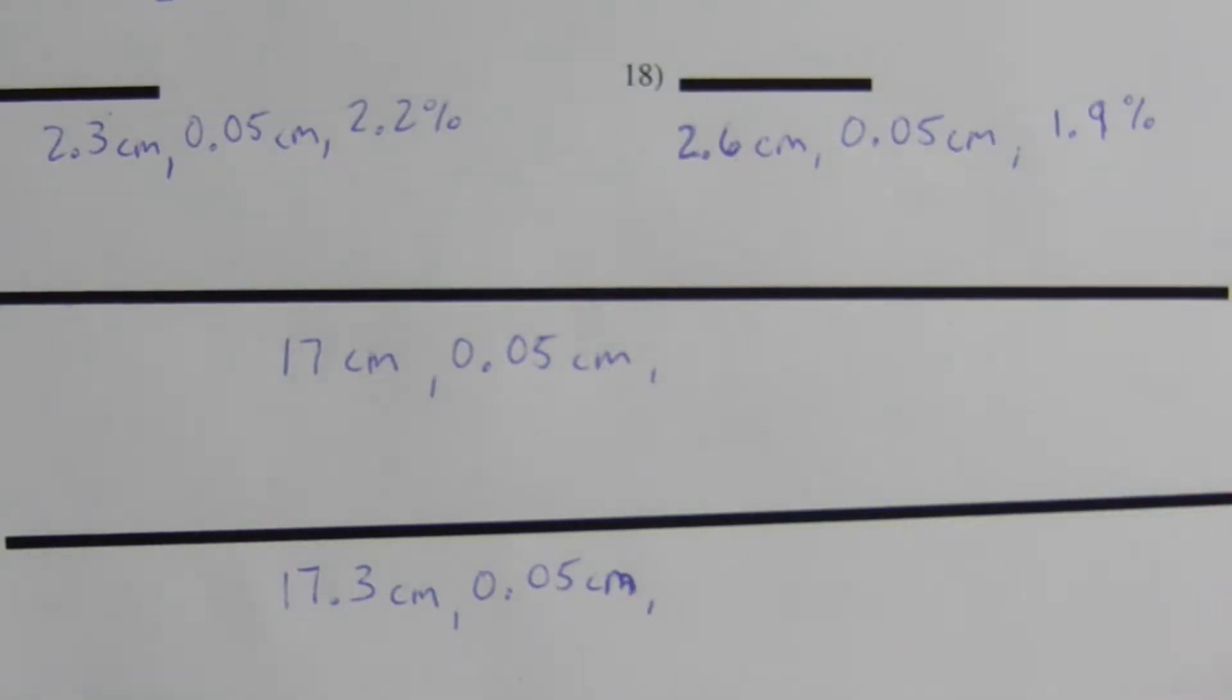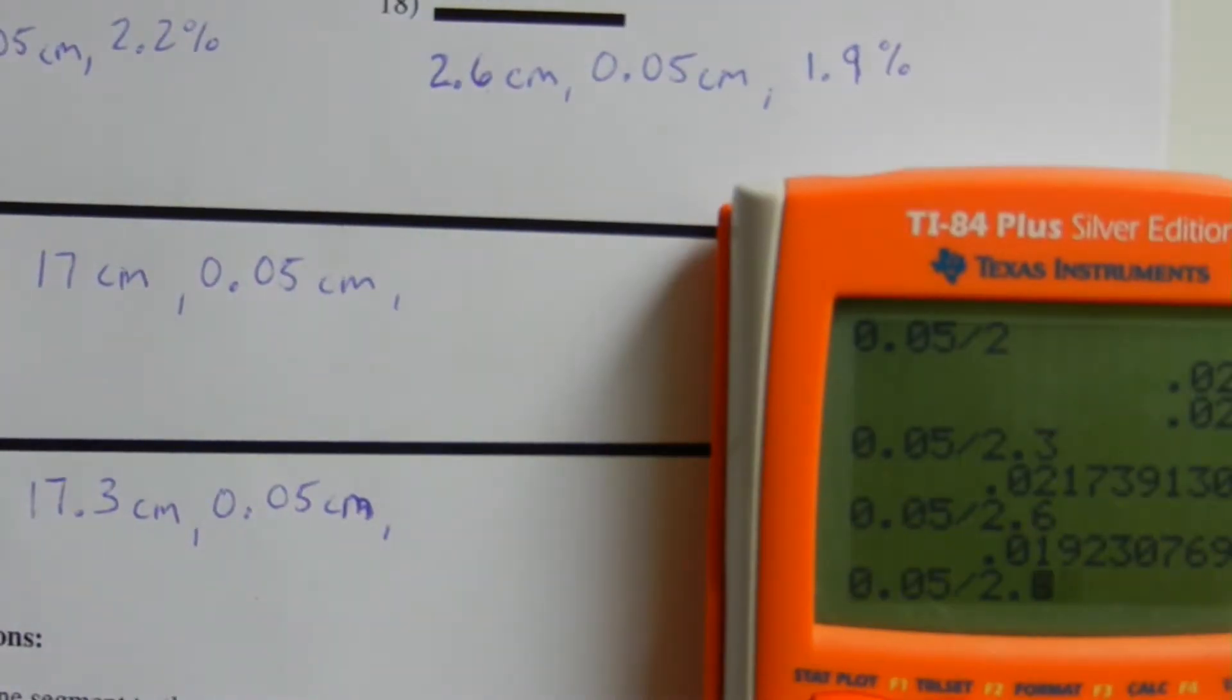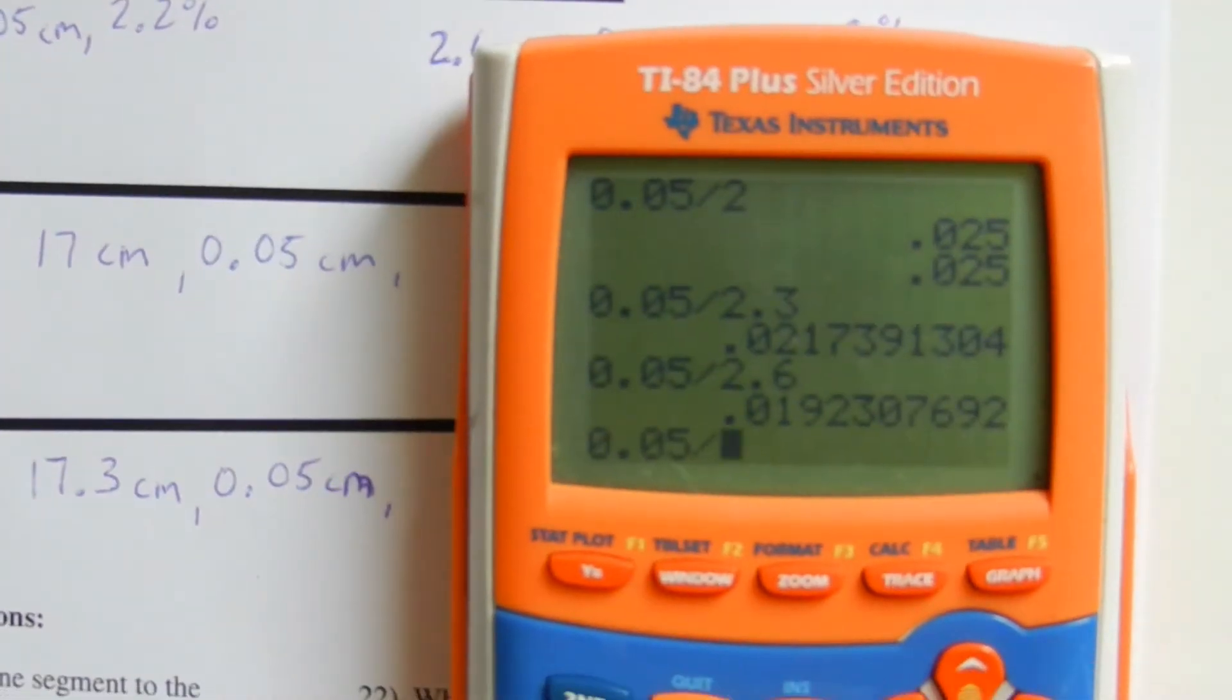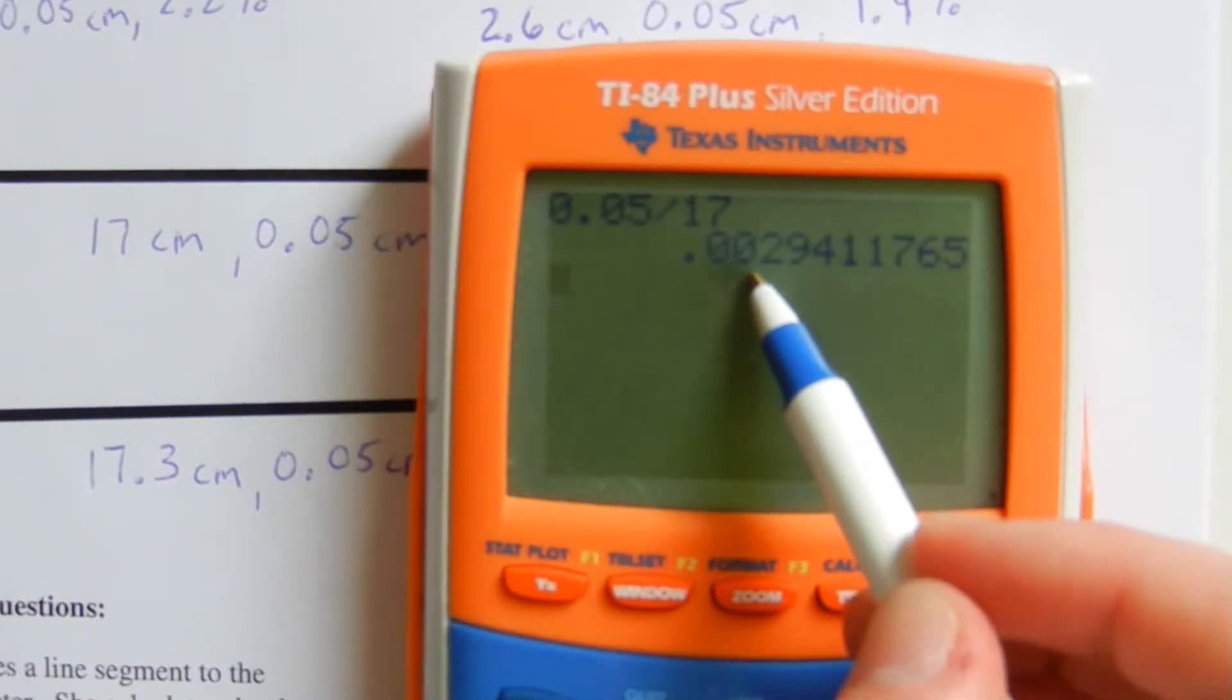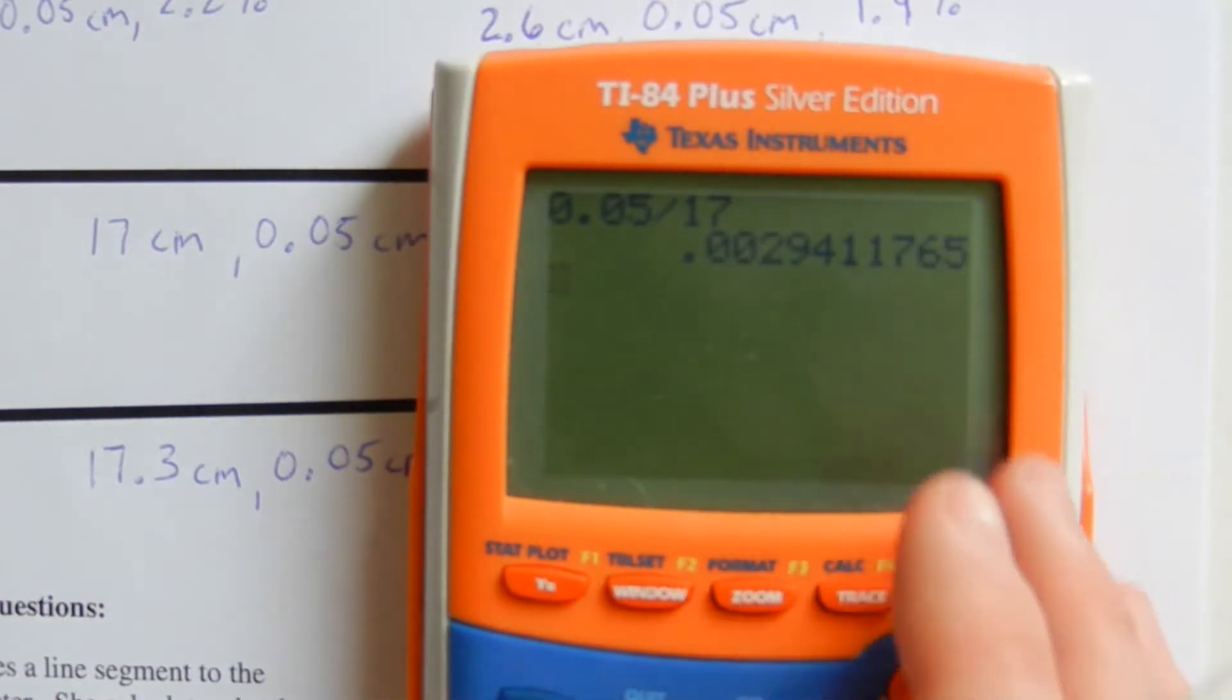And now, let's enter that into our calculator. If we take 0.05 and divide that by 17, we get approximately 0.3% rounding up in number 19.